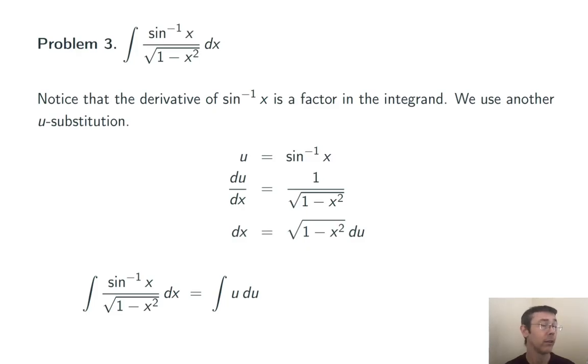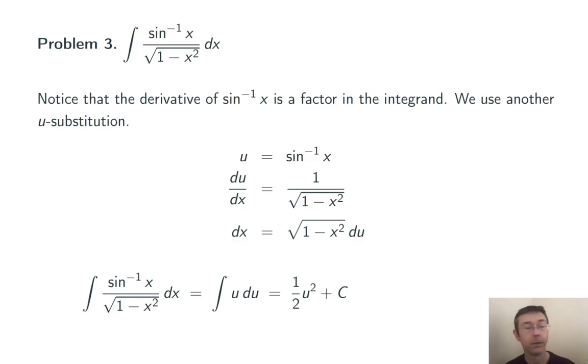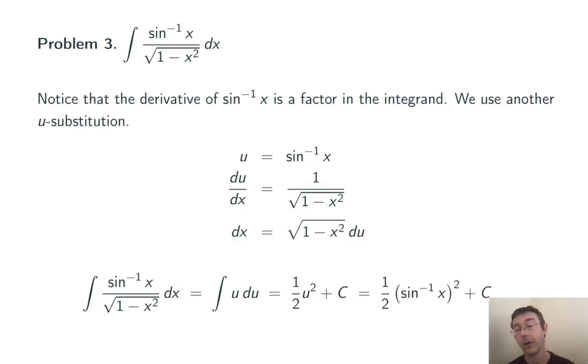After cancellation, I'm left with the integral of u du, which gives one half u squared plus C — otherwise known as one half times the arc sine of x, squared, plus C.